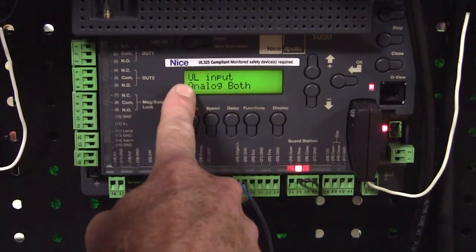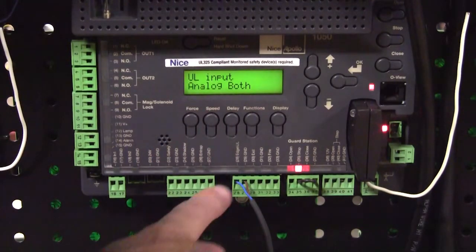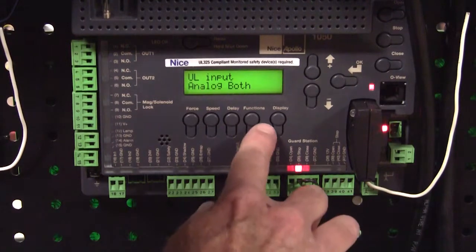So now we've got UL input analog both, so it's looking for a 10k resistive input right here which is what it's getting from this device.